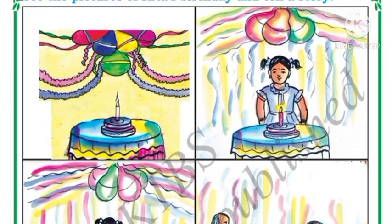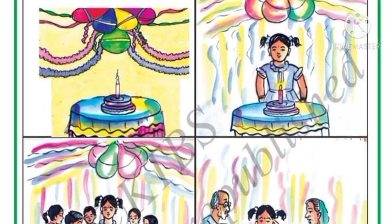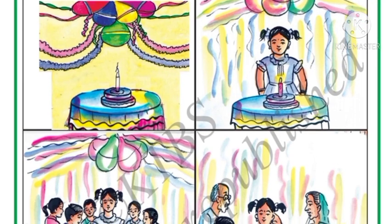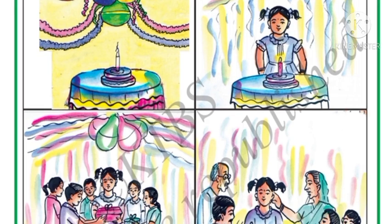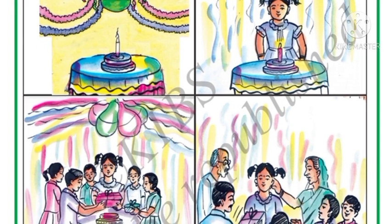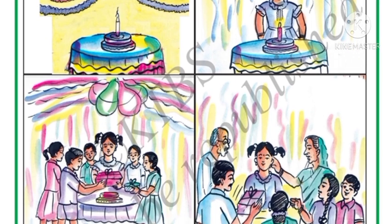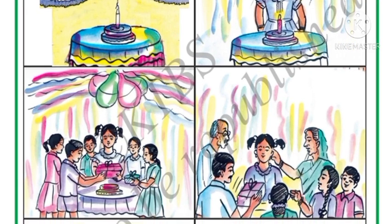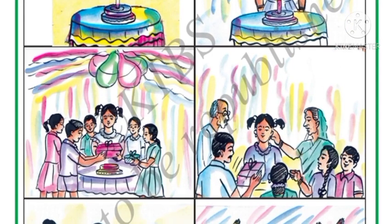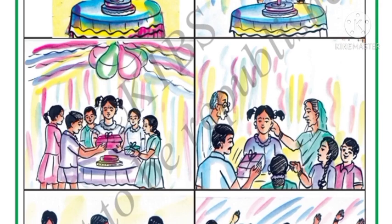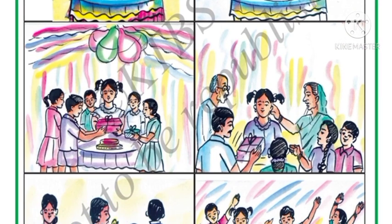See the pictures of Rita's birthday and tell a story by seeing the pictures. This is Rita's birthday — her home is decorated with balloons, cake, and candles. Rita is blowing the candles, and all her friends are giving gifts to Rita and wishing her a happy birthday. Her parents, grandparents, and friends are all happy for her and they are enjoying.